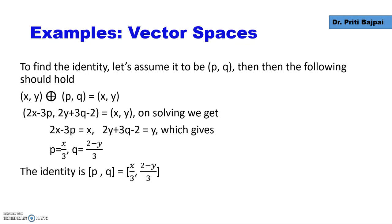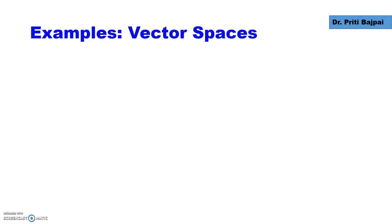So the identity becomes this: (p,q) is (x/3, (2-y)/3).